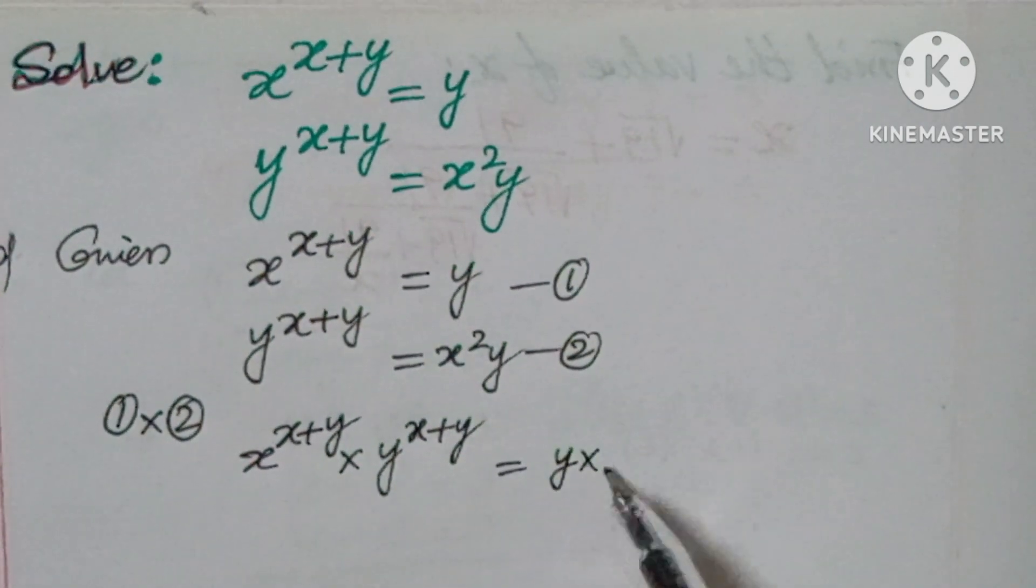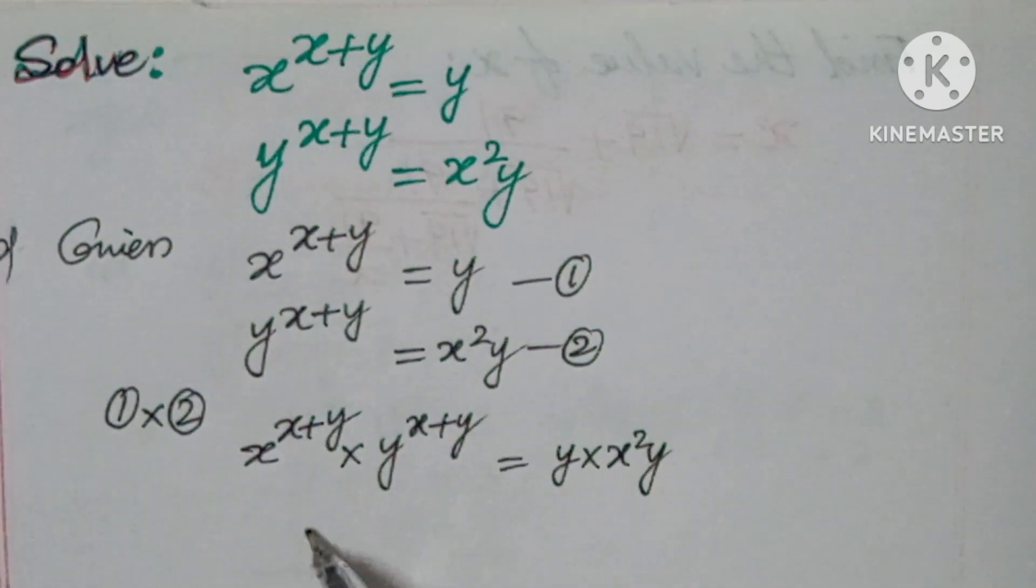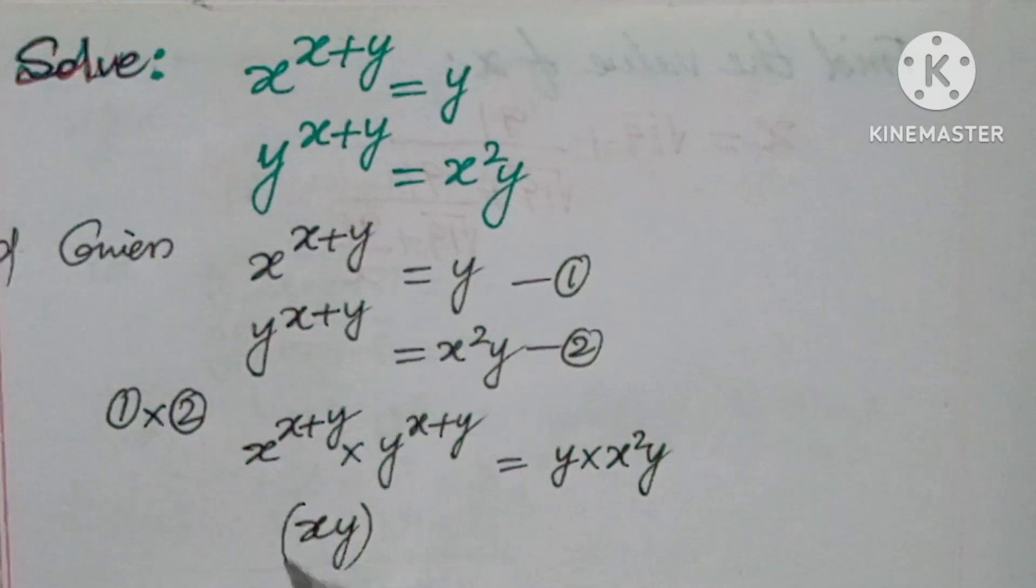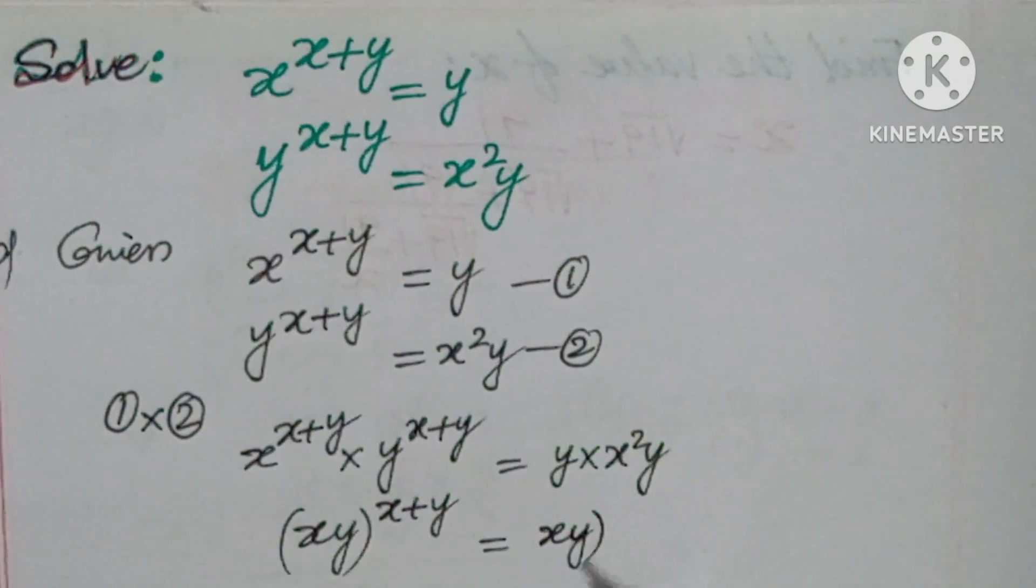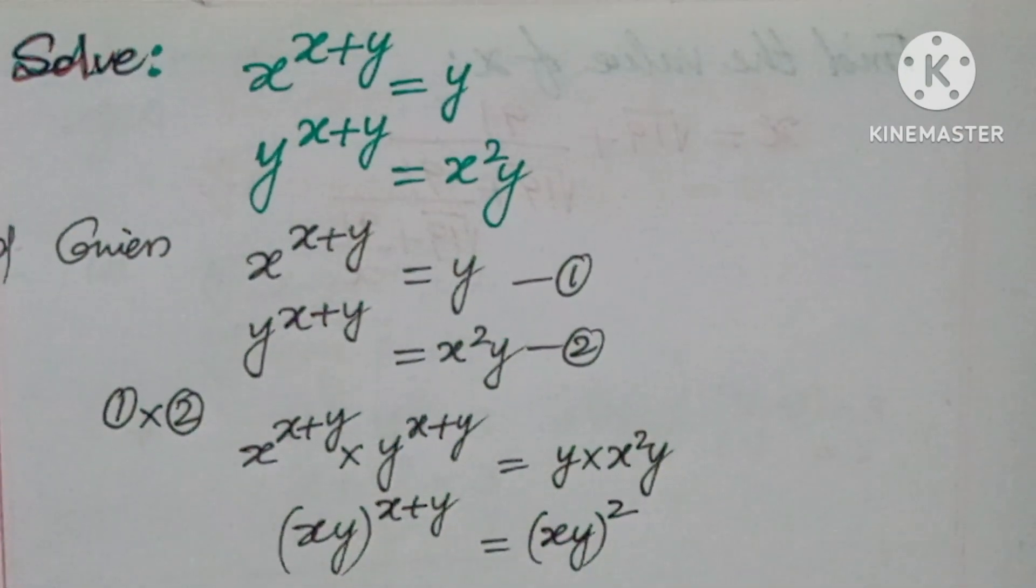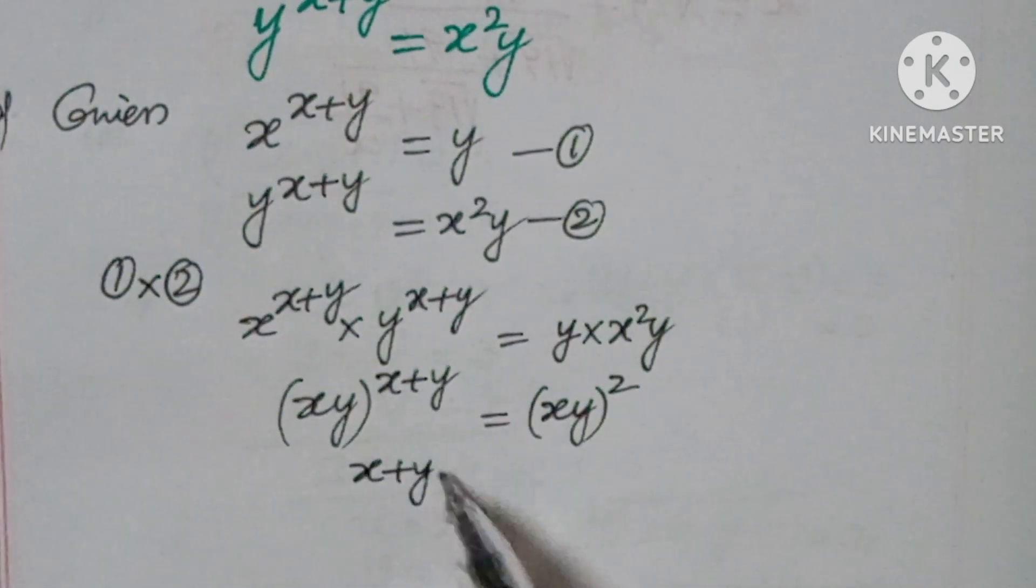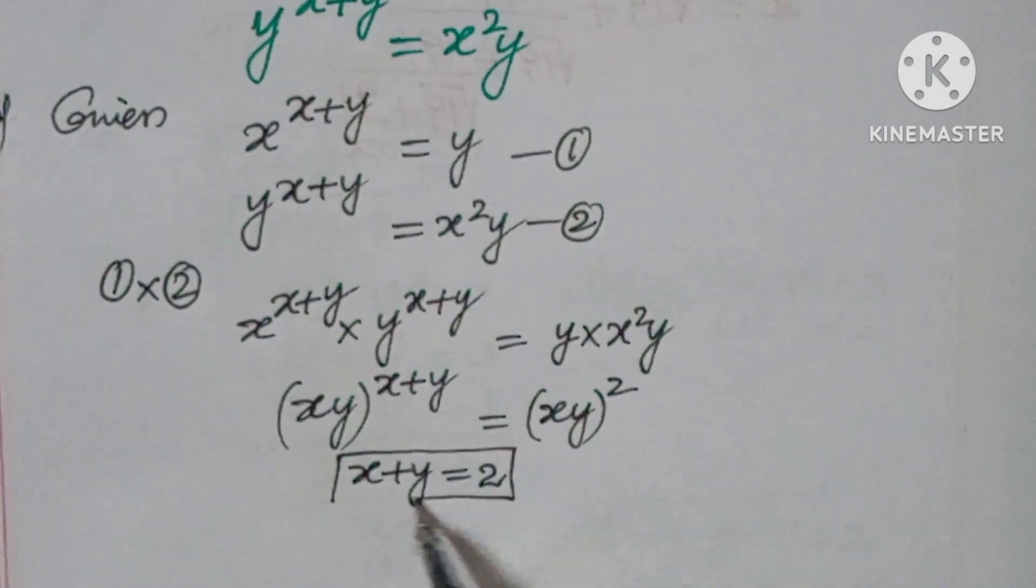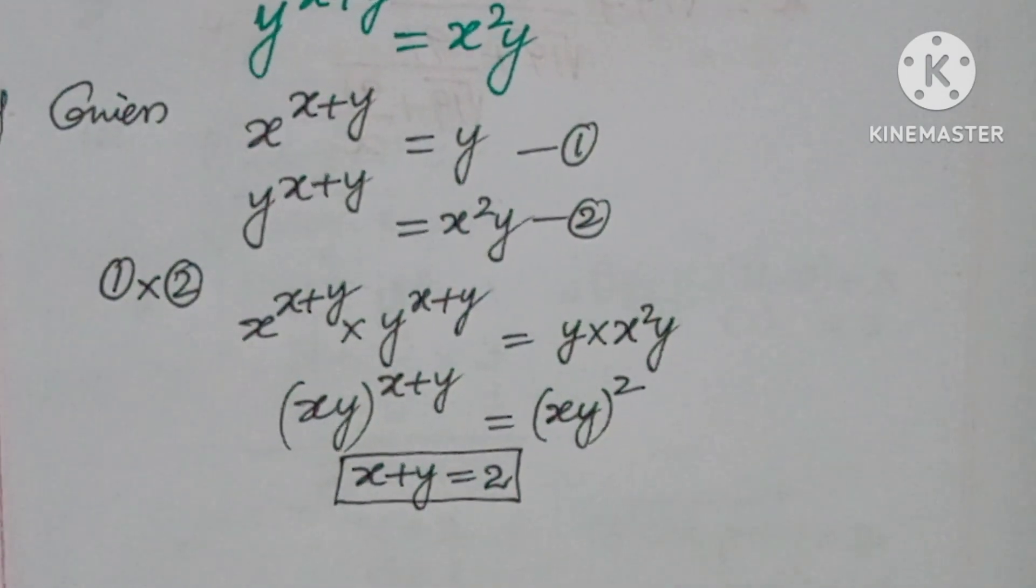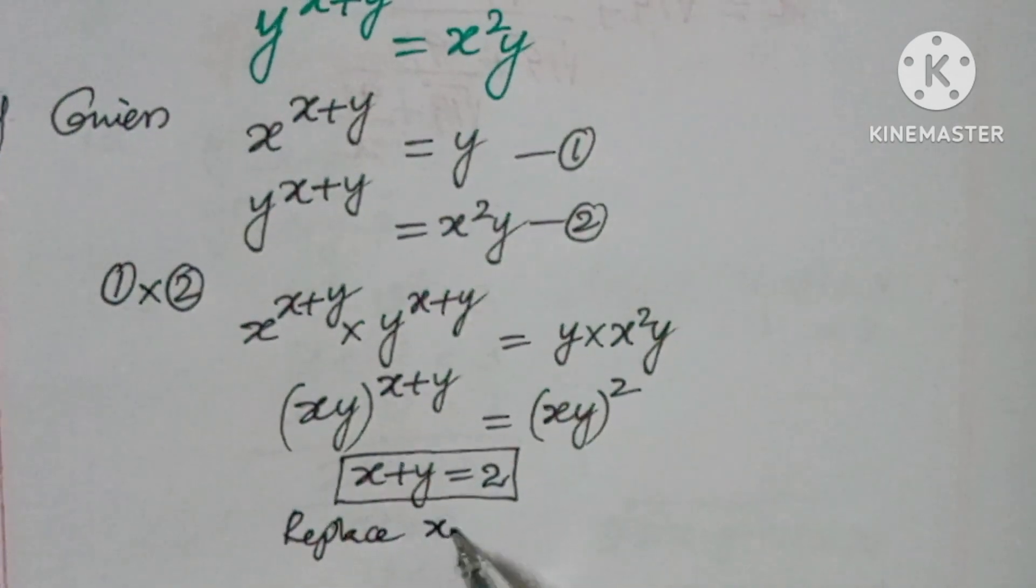This is equal to y times x squared y, which equals xy whole squared. Now the bases are equal, so the powers must be equal. x plus y equals 2. Now replace x plus y in equation one.